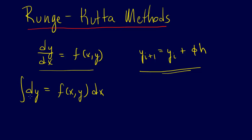And then we can integrate both sides. We'll go from y_i to y_i+1, and we'll go from x_i to x_i+1. And so we will get y_i+1 minus y_i is equal to the integral from x_i to x_i+1 of f of x,y dx.